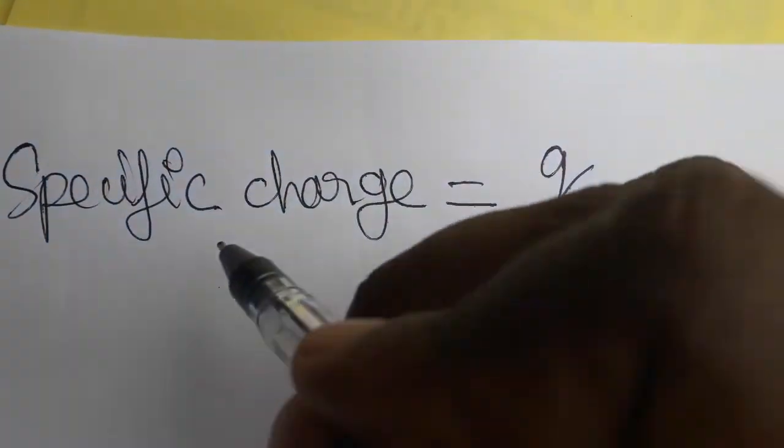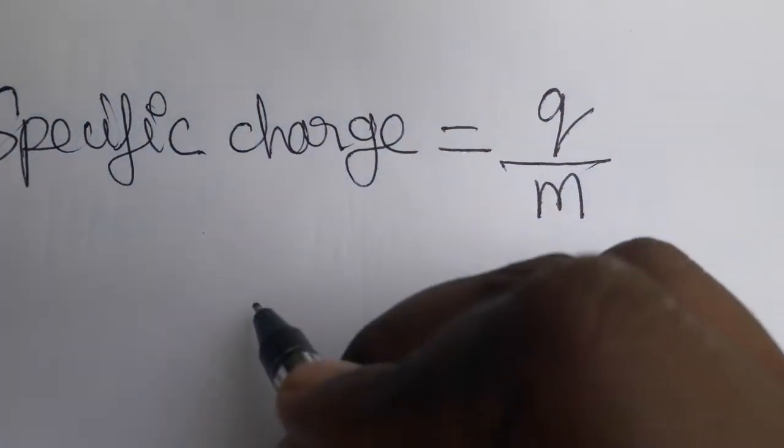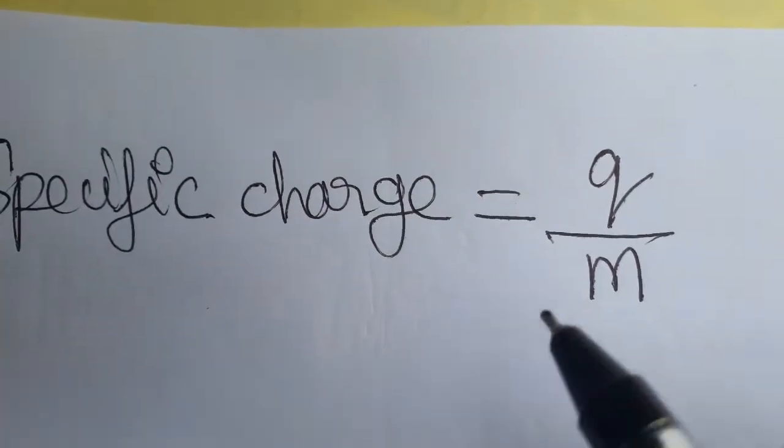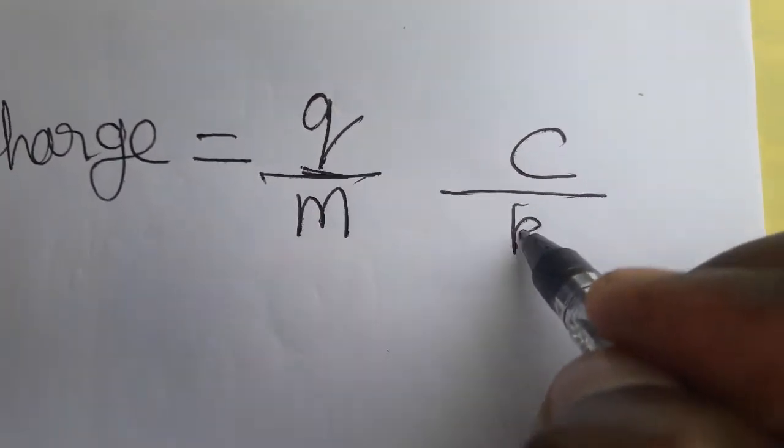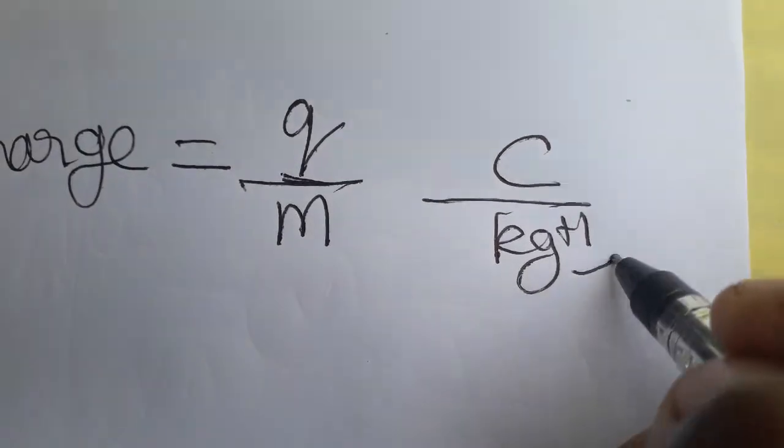Hello friends, today we are going to see specific charge, SI unit, and dimensional formula. First, we will see the specific charge SI unit. Charge SI unit is coulombs, mass SI unit is kg. Taking the +1 from denominator to numerator, we get coulombs kg⁻¹.